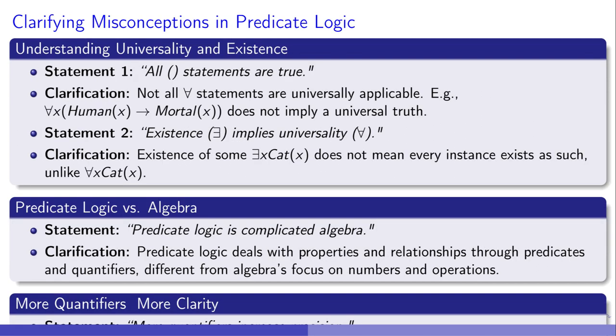Diving into predicate logic's nuances, let's dispel some myths. Picture this, saying all swans are white doesn't blanket every swan, as discovering a black swan shows. Likewise, seeing one cat doesn't make every creature a cat. Predicate logic isn't just complex algebra, it uniquely deals with relationships, not just numbers. Beware of quantifier overload. Proclaiming everyone loves someone sounds precise, but clouds the true dynamics involved. This clarity in predicate logic's misconceptions sets the stage for diving deeper into logical structures, enhancing our understanding without concluding our journey into logic's landscape.